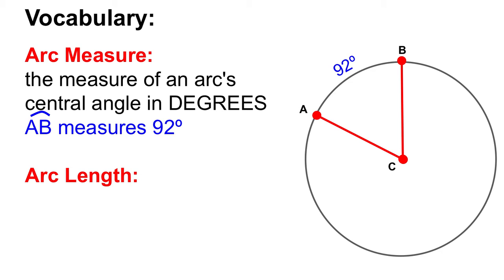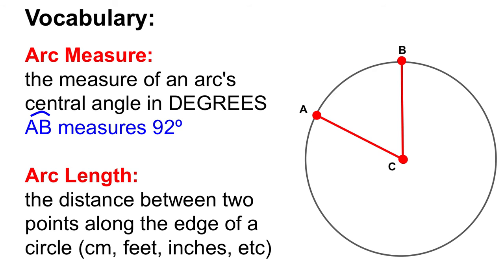Now arc length is a little different. Instead of measuring it in degrees, it's the distance between the two points. So like if you took a string and you put the string right along the arc here and then used a ruler to measure it in something like centimeters or feet or inches, we're talking about a distance instead. So that might be something like five inches. Arc measure is 92 degrees and arc length is a distance between the two points.